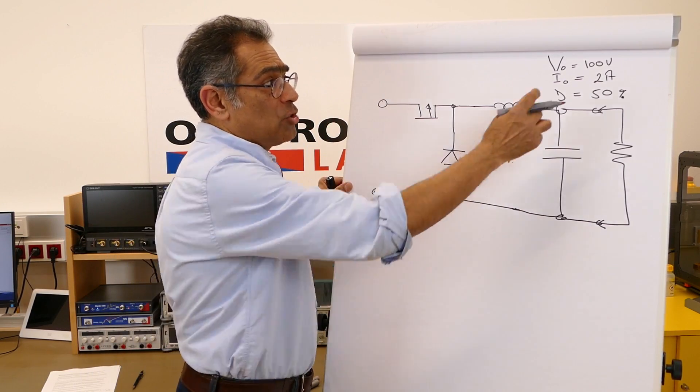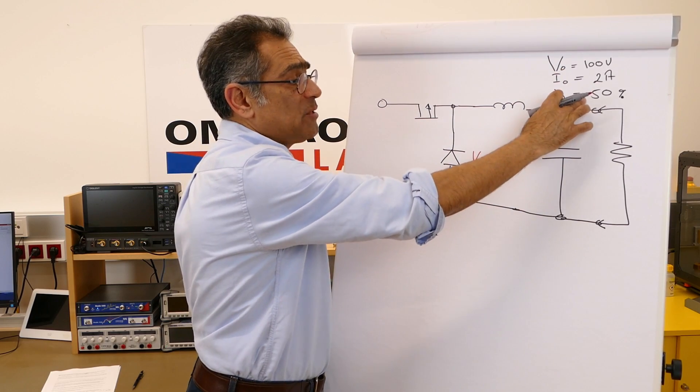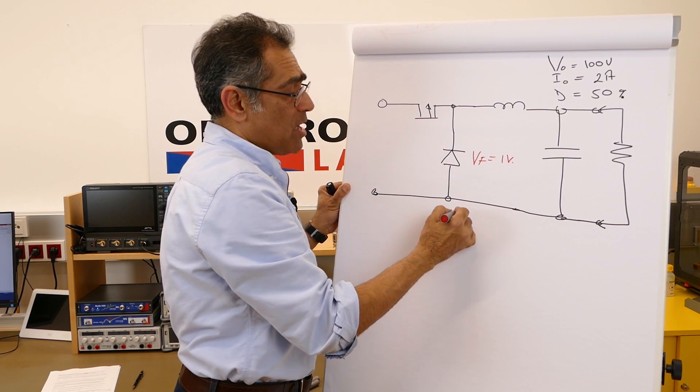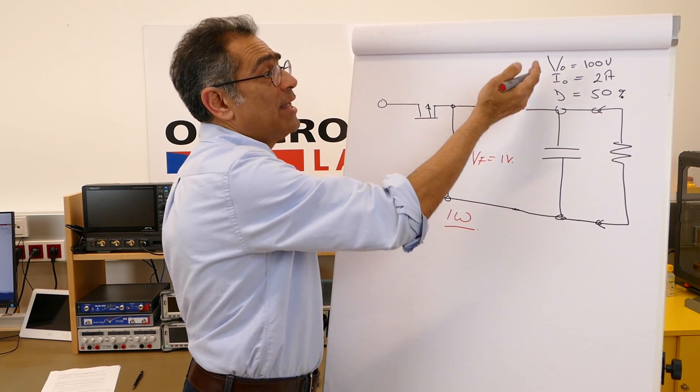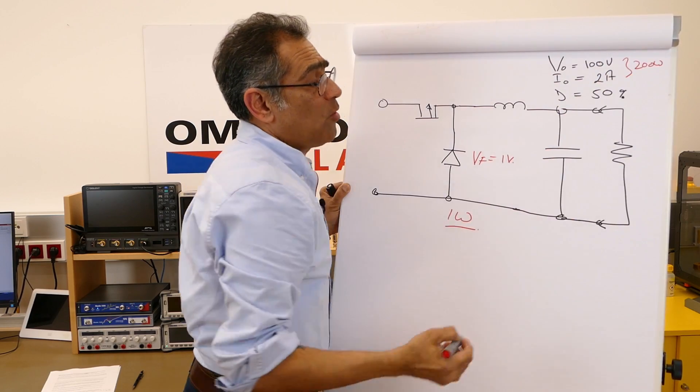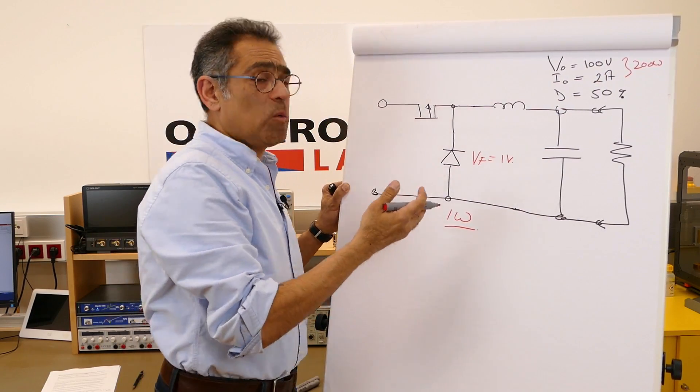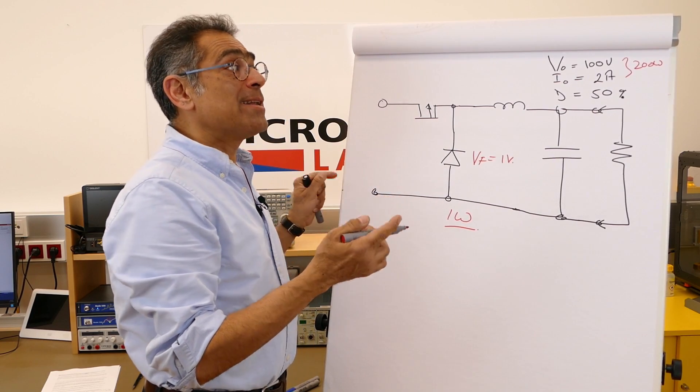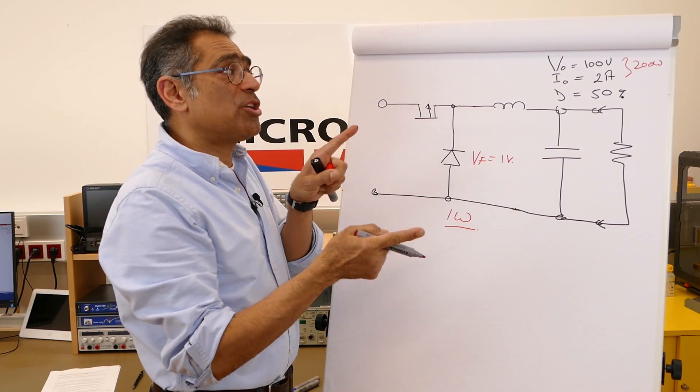At 2 amps with a duty of 50 percent and a forward drop of 1 volt we're going to dissipate around 1 watt of power in a power supply that is 200 watts. You can argue that 1 watt in 200 watts probably is not a lot.